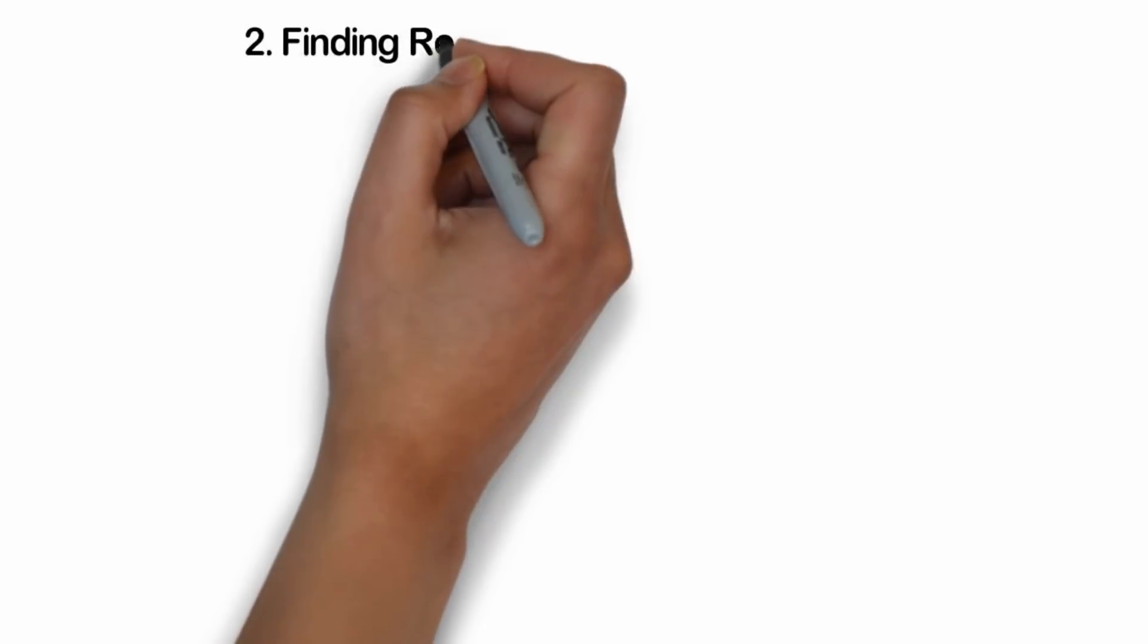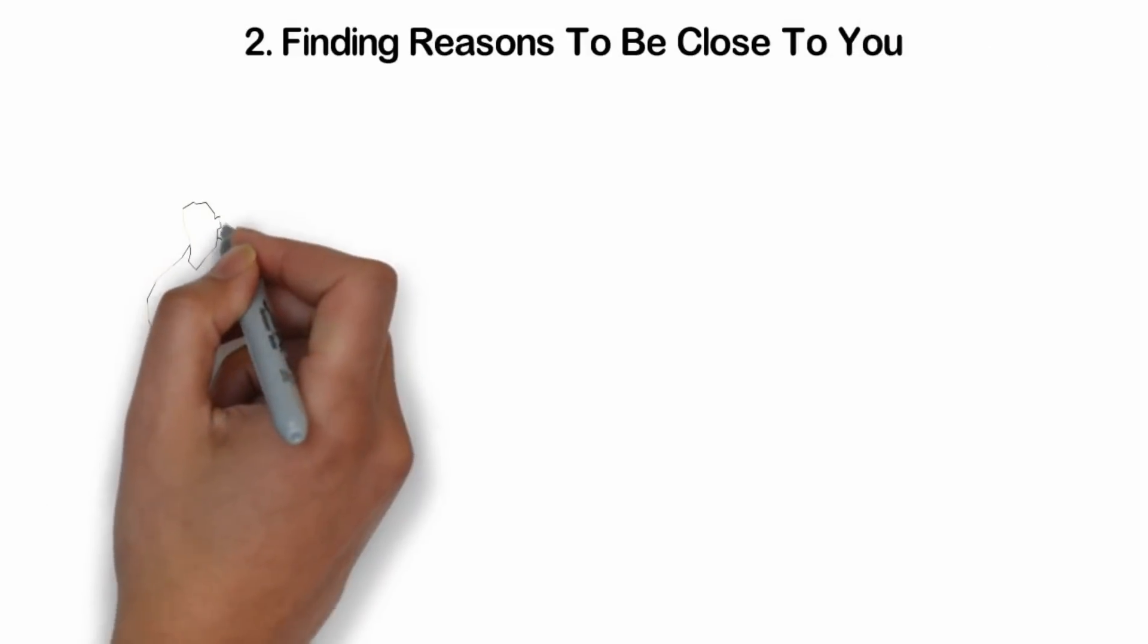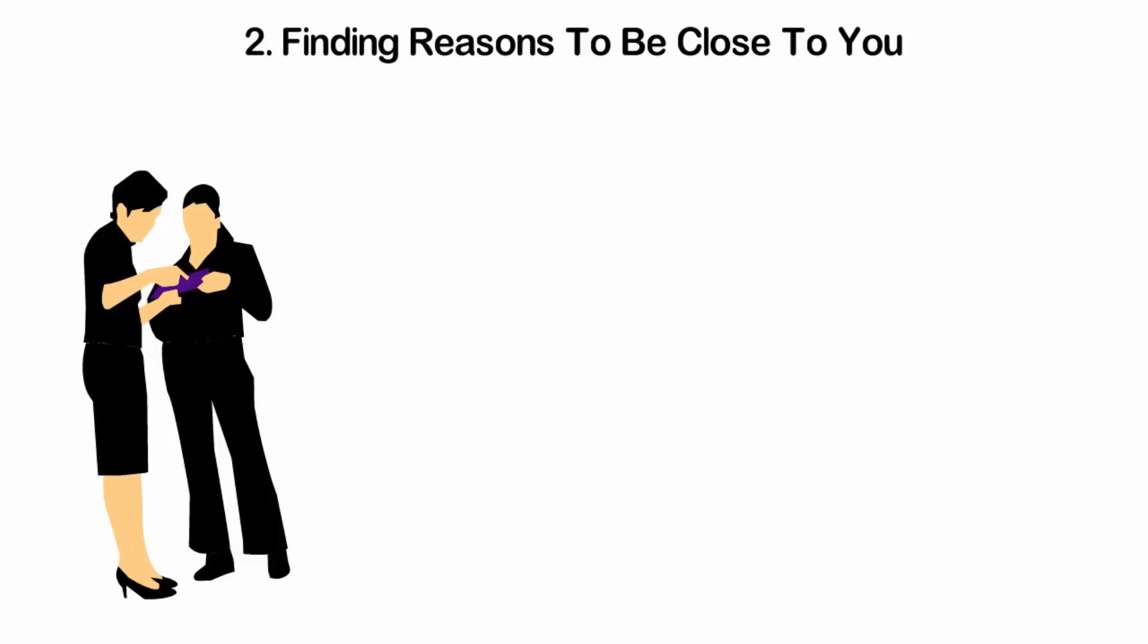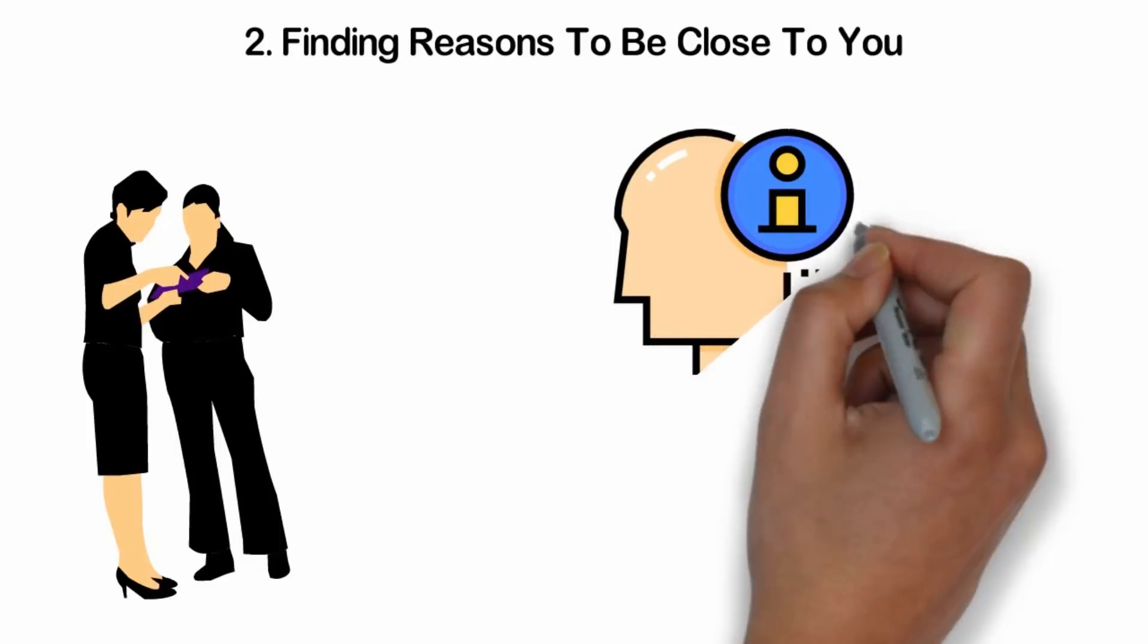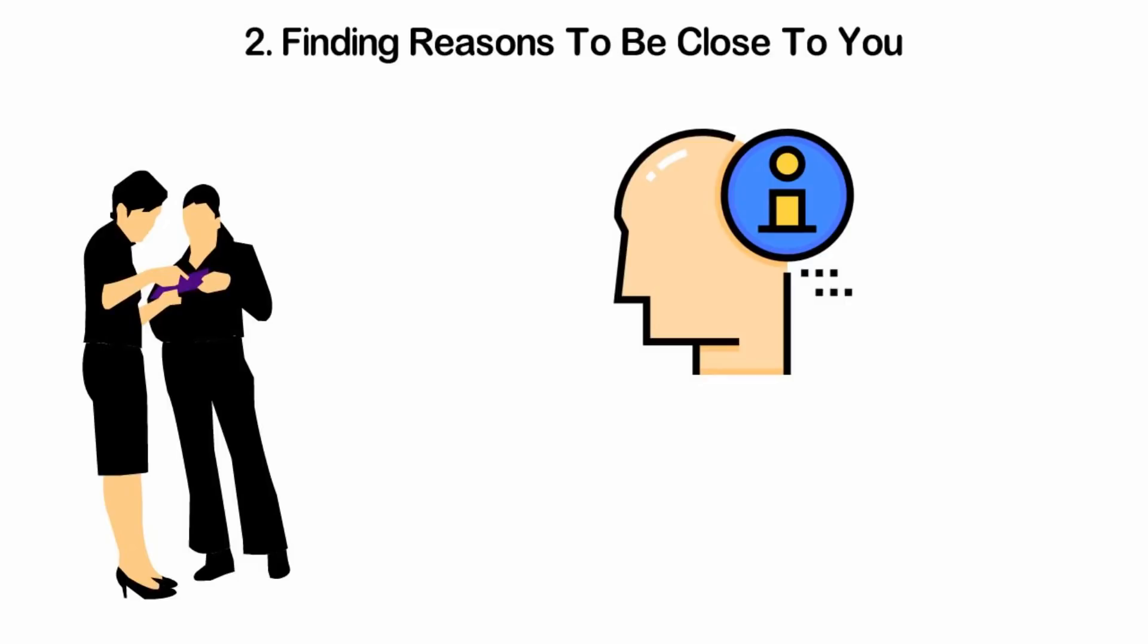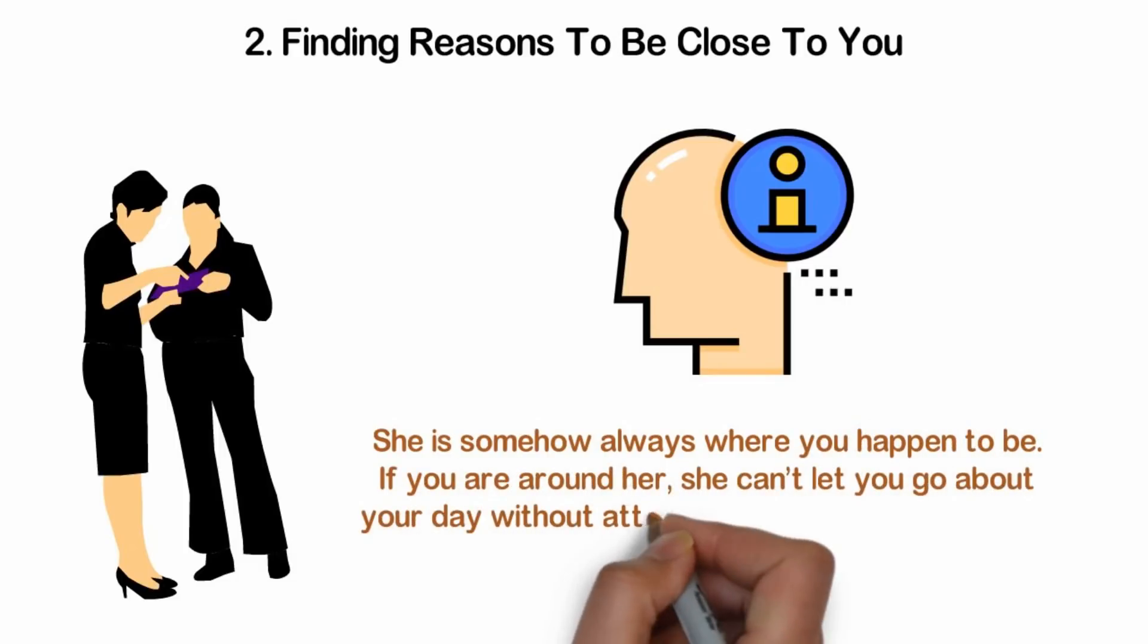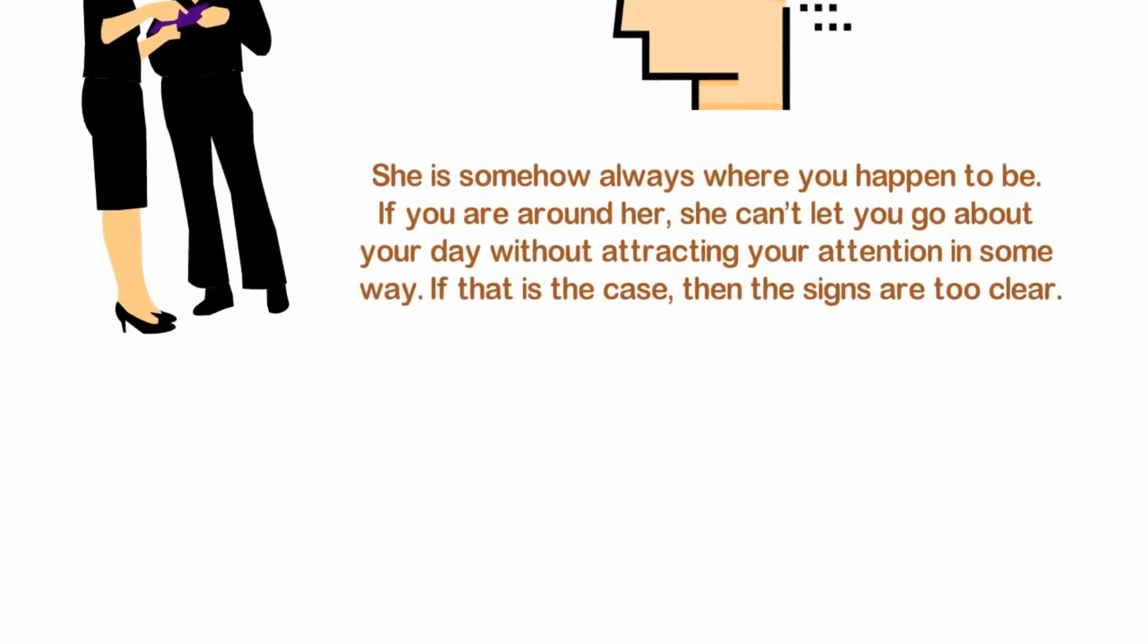Number two, finding reasons to be close to you. She might simply find your company comforting. Maybe you are really good at giving advice and she likes hearing it. She could be facing some problems in her personal life and somehow she has assigned you as her problem solver. Maybe the source of all her weird behavior can be attributed to her needing advice from you. But it's different if she's always too close. She is somehow always where you happen to be. If you are around her, she can't let you go about your day without attracting your attention in some way. If that is the case, then the signs are too clear.